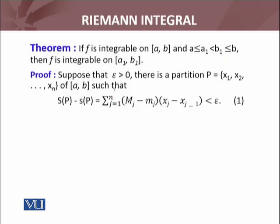We suppose that epsilon greater than 0 is any real number. There is a partition P such that upper sum minus lower sum at the partition P equals summation j equals 1 to n of (M_j minus m_j)(x_j minus x_{j-1}) is less than epsilon. Since this smaller interval is a part of that larger interval, for the larger interval this is less than epsilon, so this is true.